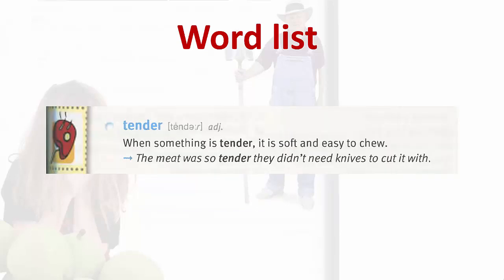Tender. When something is tender, it is soft and easy to chew. The meat was so tender, they didn't need knives to cut it with.